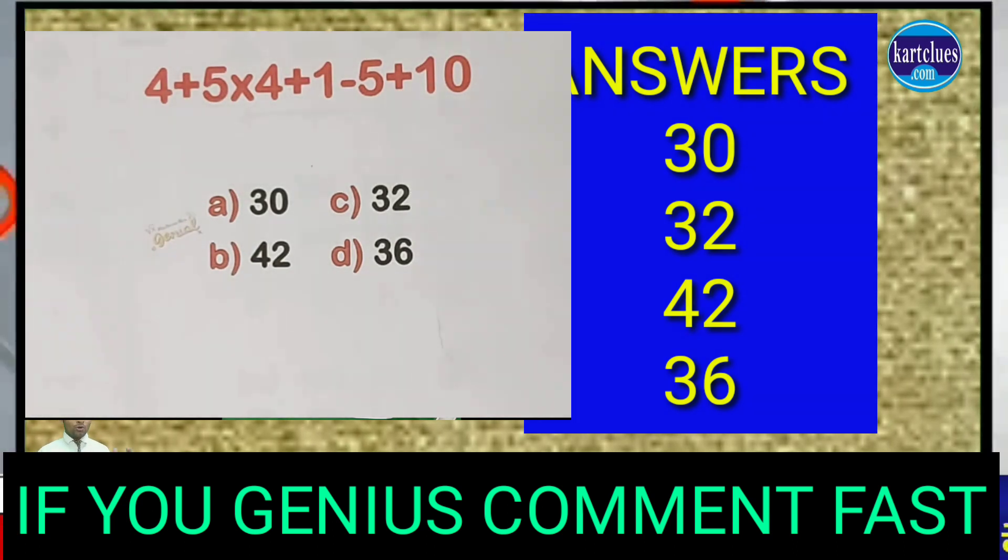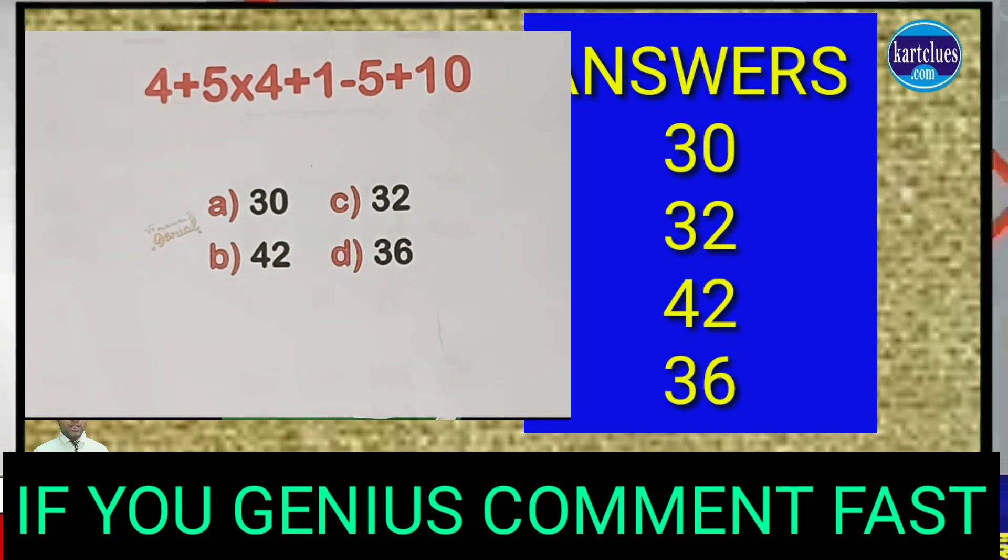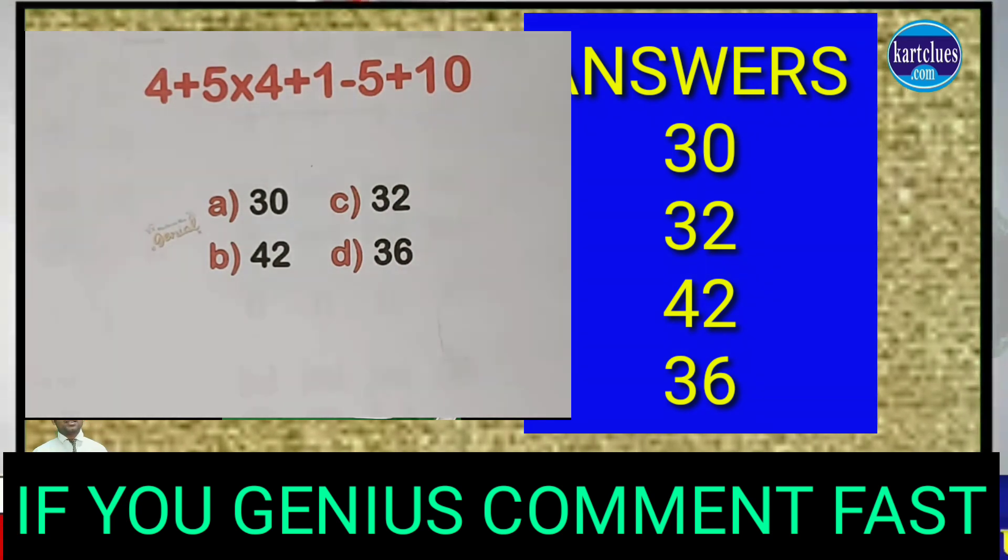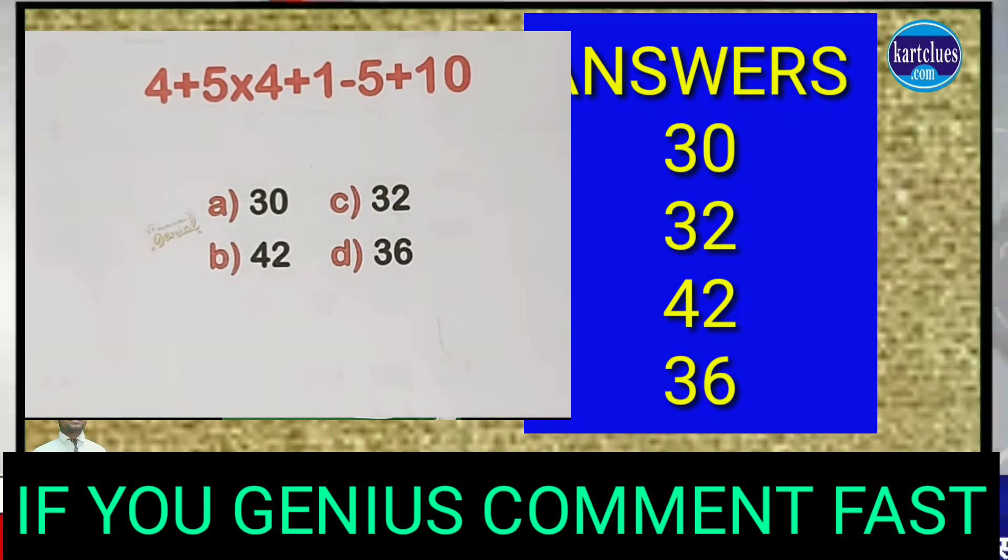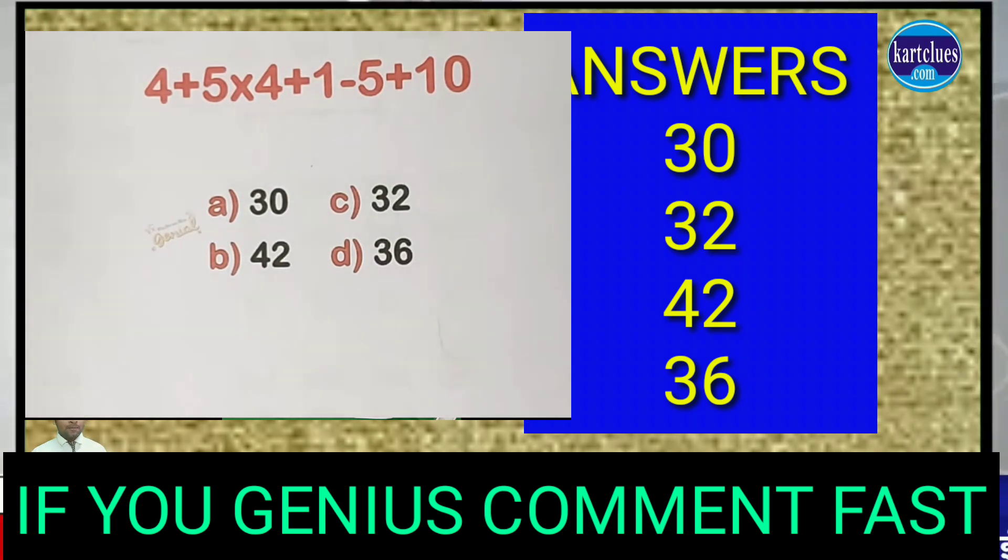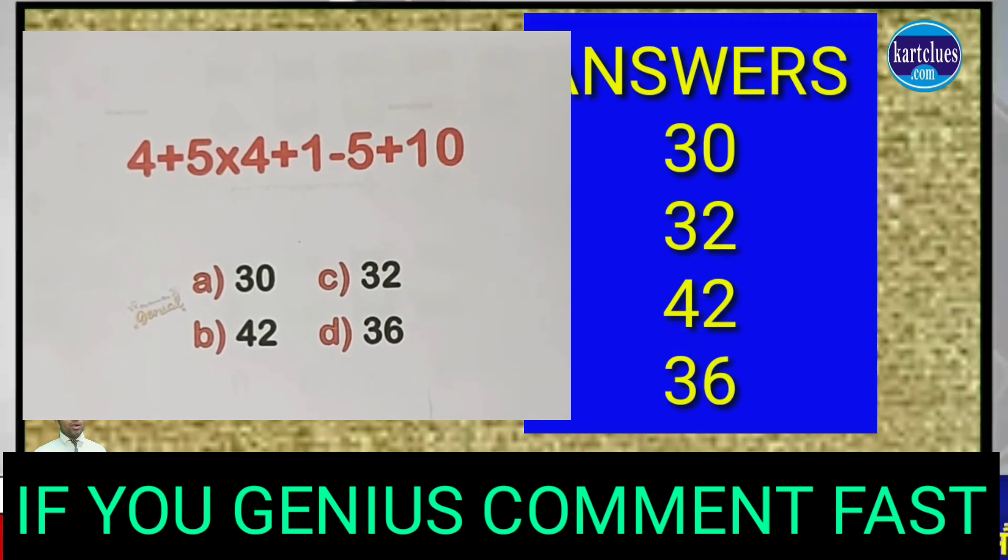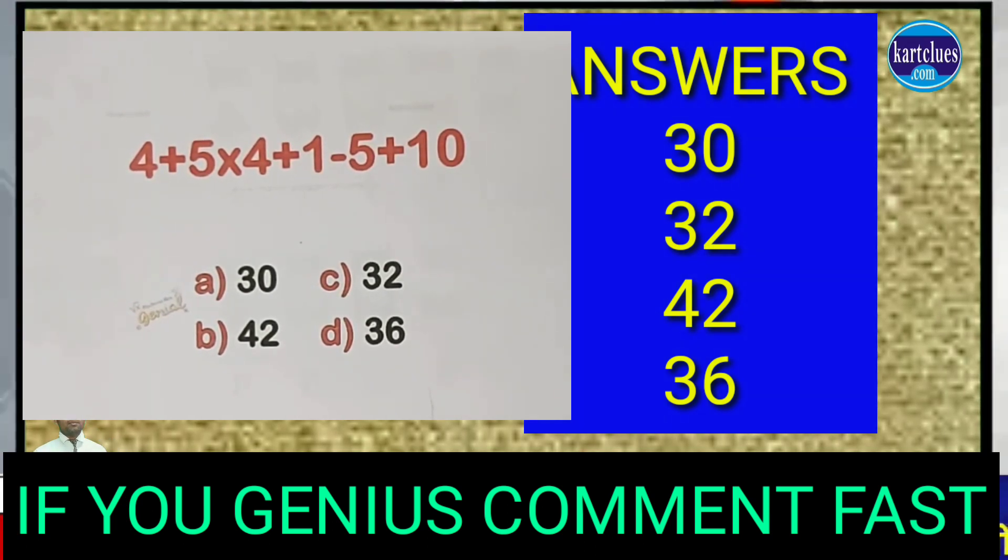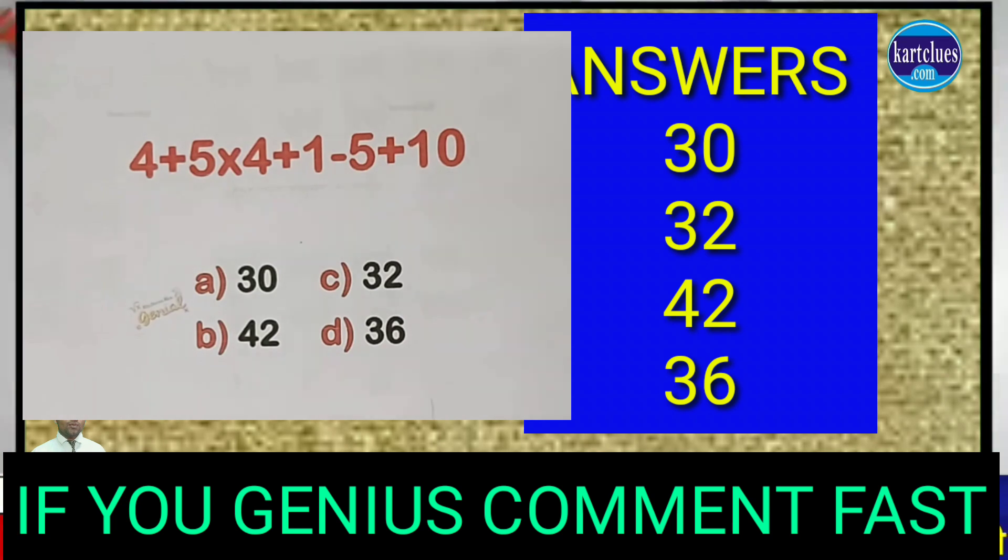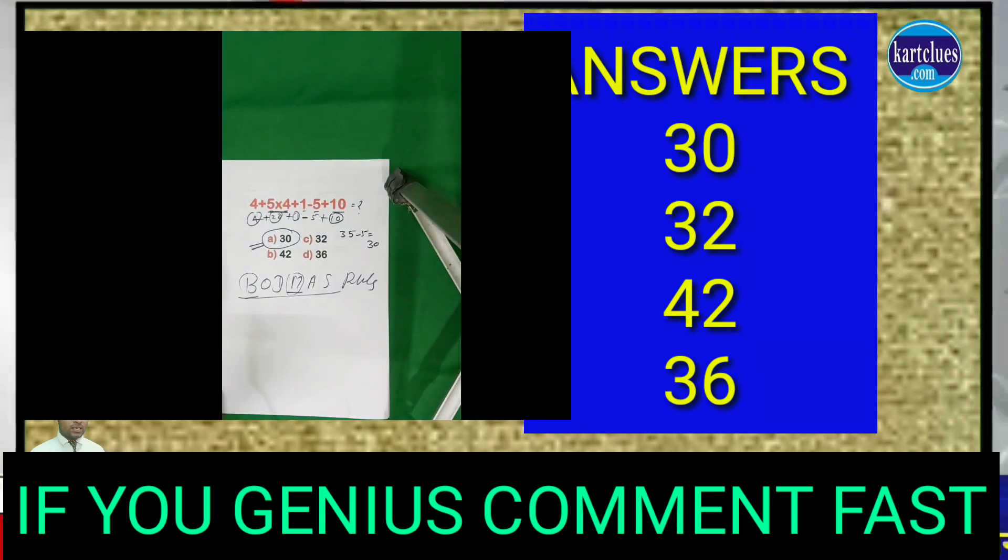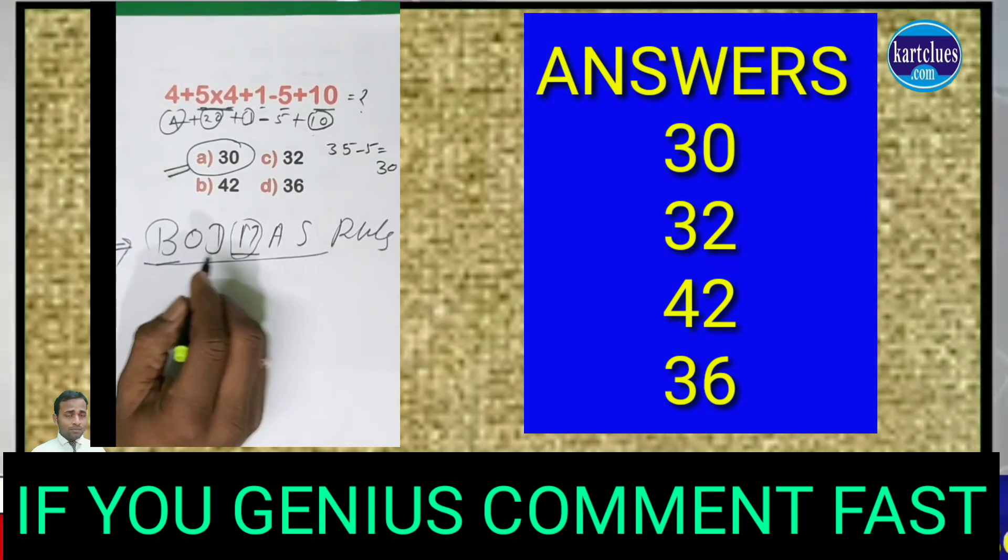So if you know the answer, please tap on the blog comment and hurry. After 30 seconds I will explain the method for how the answer will come. So now I start. See friends: 4+5×4+1-5+10. Do you know what BODMAS rule you have to follow?